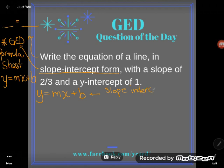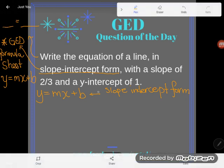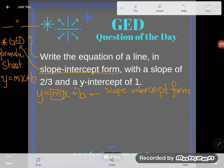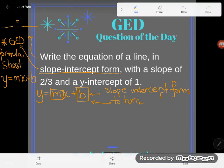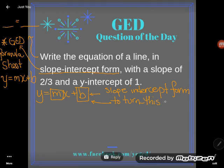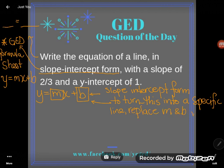If you want to turn it from a generic slope-intercept form like this describes any line into a specific line, then you are going to need to replace the M and the B with numbers. So to turn this into any specific line, replace M and B with numeric values.